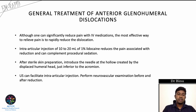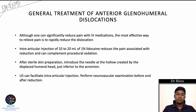An intra-articular injection of 10 to 20 ml of 1% lidocaine reduces pain associated with the reduction and can complement procedural sedation. After sterile skin preparation, introduce the needle at the hollow created by the displaced humeral head and inject 10 to 20 ml of 1% lidocaine just inferior to the acromion. Ultrasound guidance can also be used to facilitate this injection. Perform neurovascular examination before and after reduction.